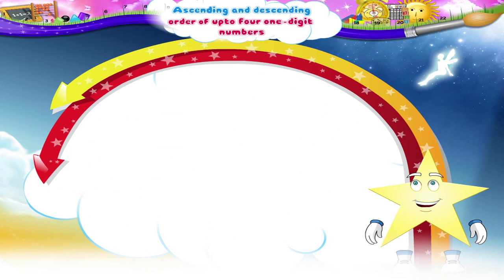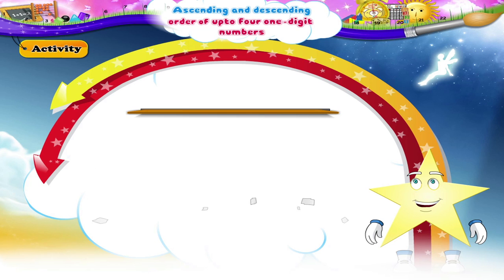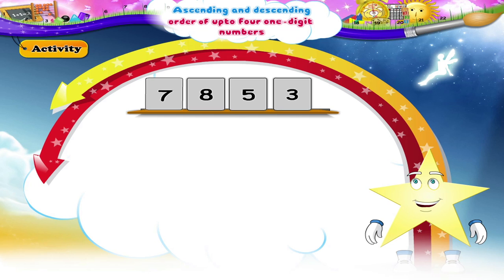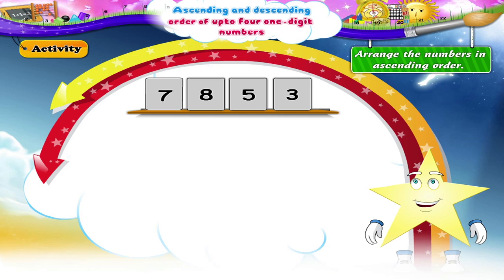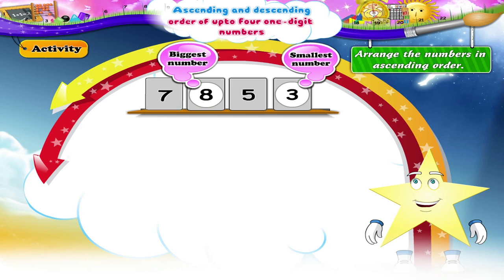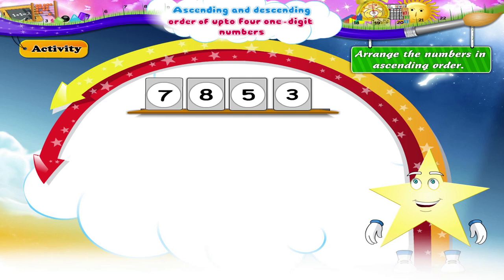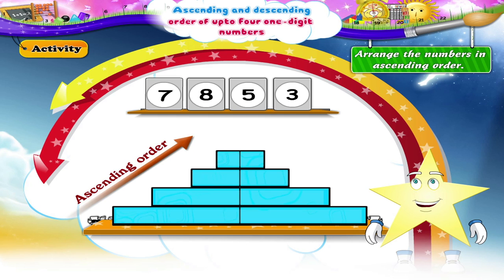Now, let us do an activity together. Here are sets of four numbers. We have to first circle the smallest number, then the biggest number, and then put the numbers in ascending order. Shall we begin? Seven, eight, five, three. The smallest number is three. The biggest number is eight. Between seven and five, five is the smaller number. The numbers in ascending order are three, five, seven, eight.